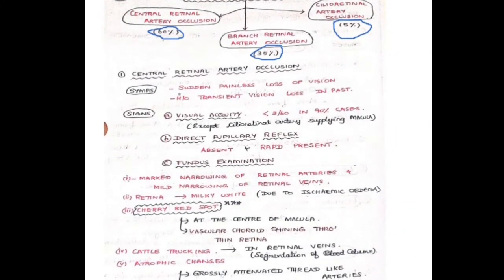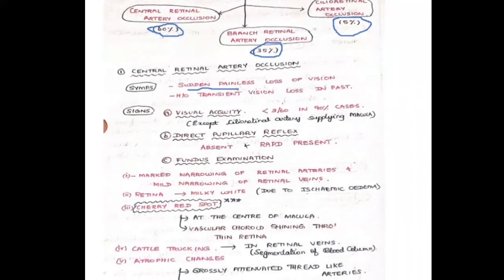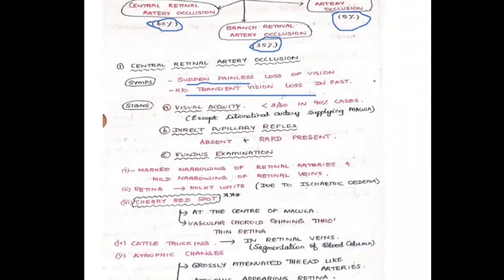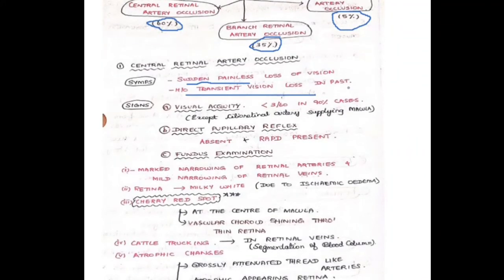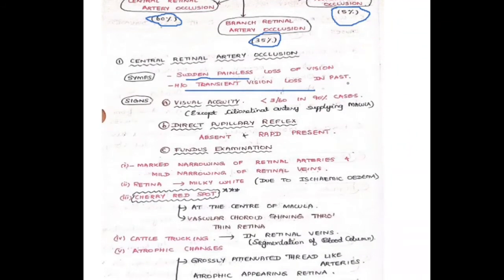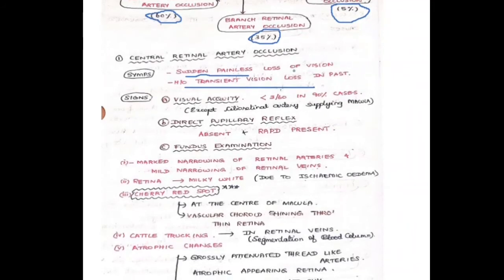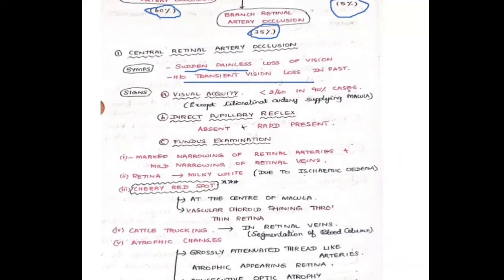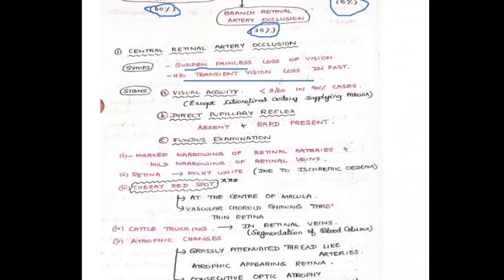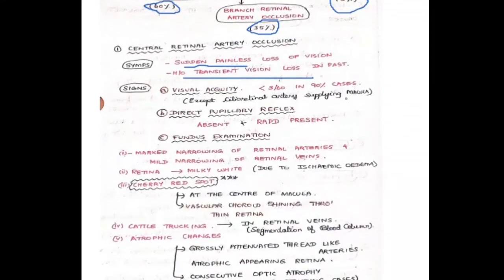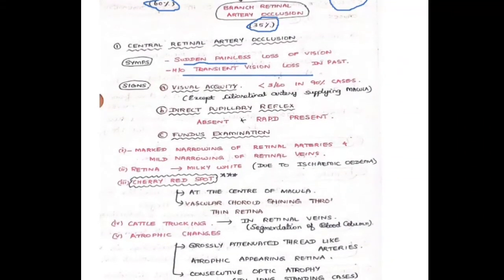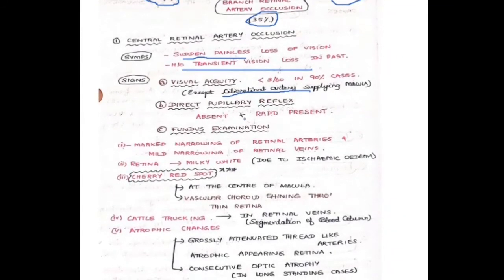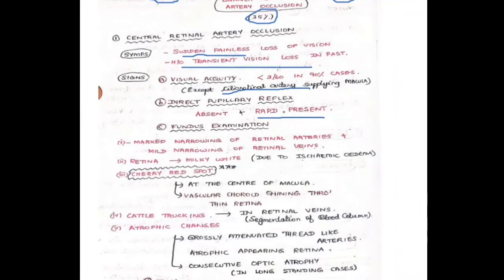Symptoms of central retinal artery occlusion include sudden painless loss of vision, which is the most common symptom. There may also be a history of transient vision loss in the past. On examination, visual acuity is less than 3/60 in 90% of cases. If the cilio-retinal artery is spared and supplying the macula, vision may be better. Direct pupillary reflex may be absent, and RAPD (relative afferent pupillary defect) is present.